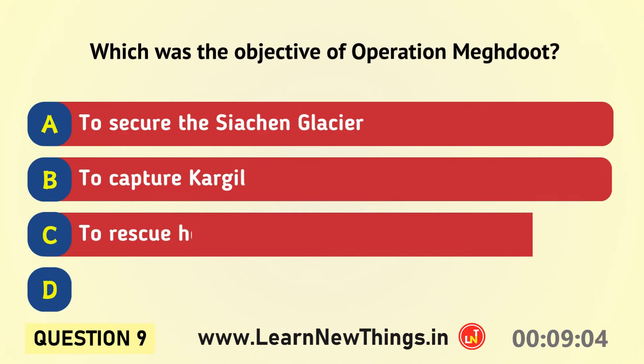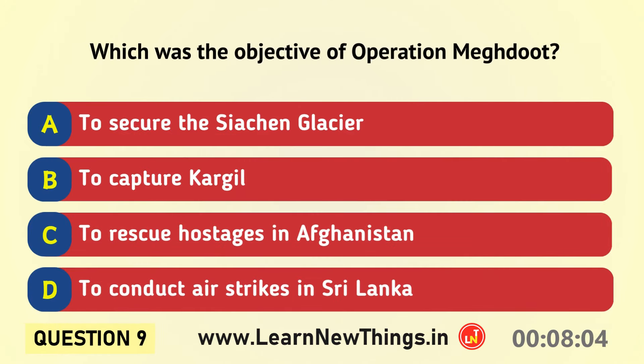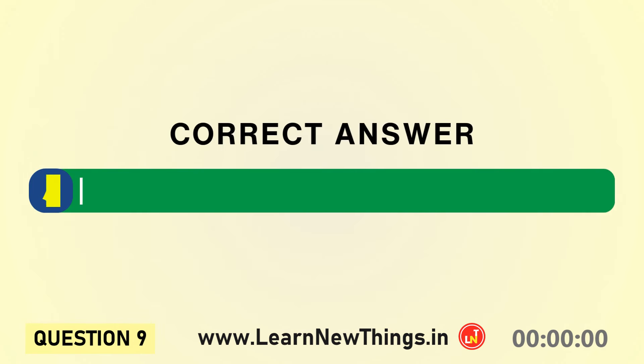What was the objective of Operation Meghdoot? To secure the Siachen Glacier.